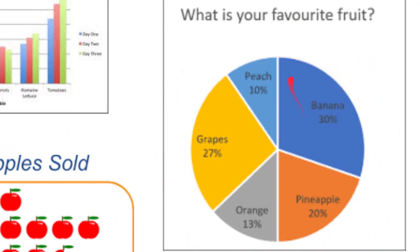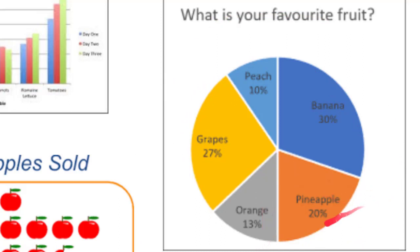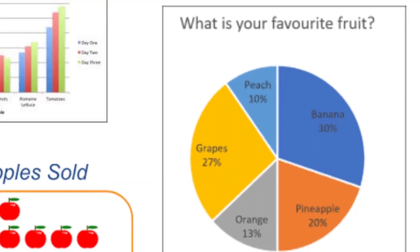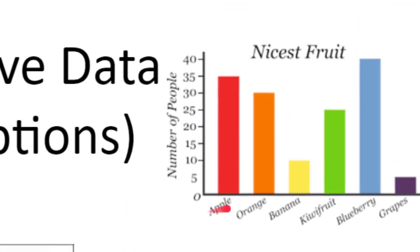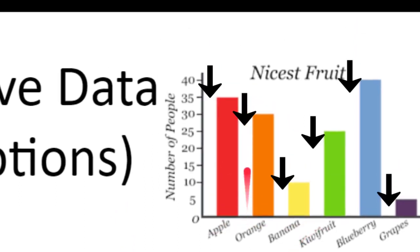Here we have a circle graph broken up into different percentages showing what types of fruit people like. We don't even know how many people are in it, but we know 20% liked pineapples, and most people liked bananas closely followed by grapes. In a bar graph, notice the space between the bars — there's a distinct separation because there's no apple-orange combination. These are distinct items that cannot be combined; there's no continuous feature to them.